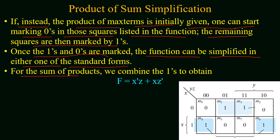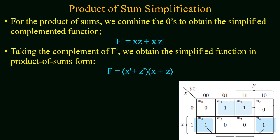If we make a group of all the ones given in the map, we will have the sum of product function, and the function will be equal to x'z + xz'. For the product of sum simplification, we combine zeros to obtain a simplified complemented function, so f prime will be equal to xz + x'z'. Now if we take the complement of f prime, we will have the simplified function in the product of sum form, and the function will be f = (x' + z')(x + z).